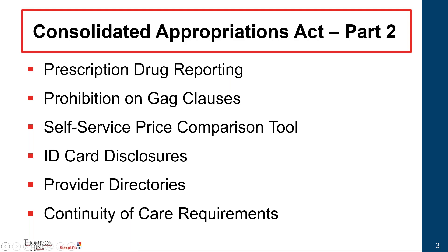Today's presentation will cover several group health plan transparency requirements under the Consolidated Appropriations Act. To start us off, Mark and Austin will discuss prescription drug reporting requirements. Then Austin and I will turn to the prohibition on GAG clauses, the requirement for group health plans to implement a self-service price comparison tool, ID card disclosure requirements, provider directory requirements, and continuity of care requirements.